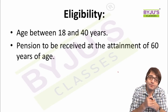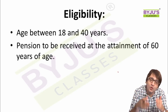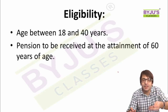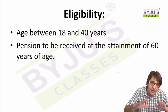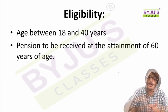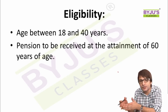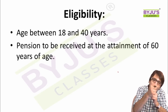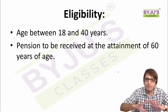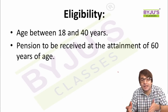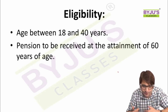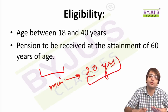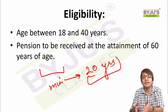The government provided an important incentive: anyone who joined Atal Pension Yojana before 31st December 2015 and is not an income taxpayer will receive a 50% contribution from the Government of India. The minimum contribution period is 20 years — for example, someone joining at 40 must contribute from 40 to 60 years — making 20 years the minimum to become eligible for pension after attaining age 60.